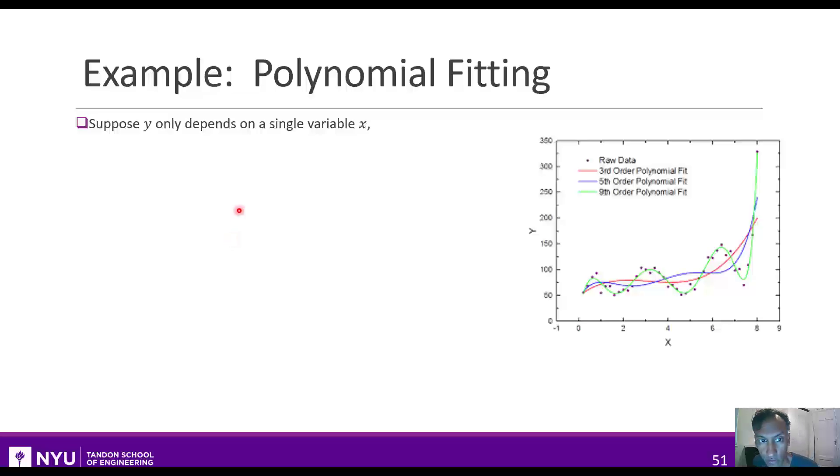Okay, let's start with the first simple example. Suppose that y depended on a scalar variable x, and we had data like these purple points here. Clearly, a linear fit is not a very good fit for that data, because there's a more complicated relationship between x and y. So what we might try to do is fit a polynomial model, where y is a polynomial function with some order d.